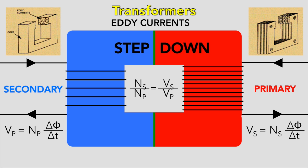Transformers are used in the national grid to transport electricity at minimum currents to reduce energy loss, and therefore at very high voltages. Step-up and step-down transformers are used to transport electricity efficiently and then make it safer for the home. It would be quite dodgy if you had 40,000 volts coursing through your toaster — if you touched it, you'd get toasted.